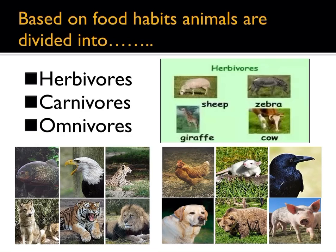Animals like cows, goats, sheep, and giraffes eat grass or green plants — that is, they only eat plants. Such animals are called plant-eating animals or herbivores.